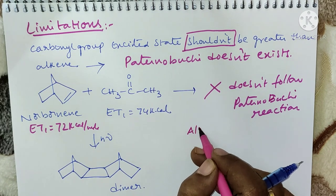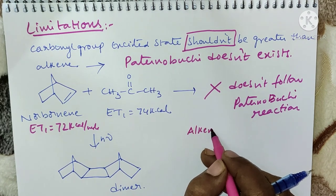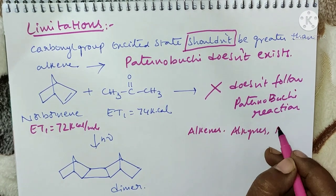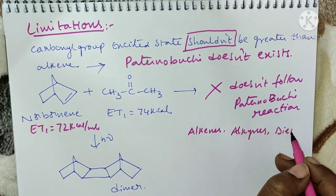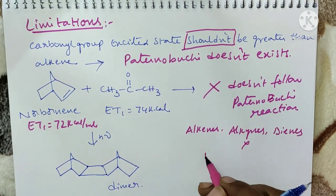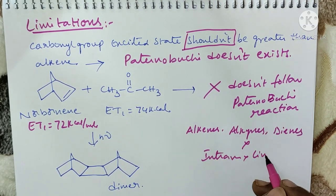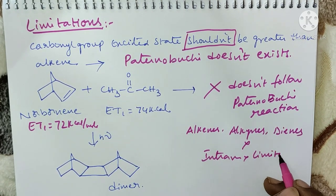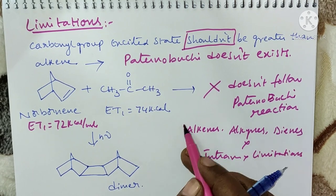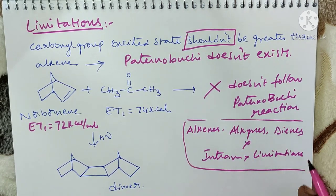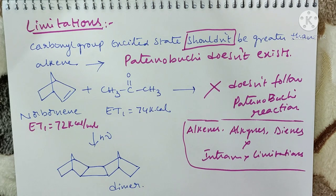In this video we explained the Paterno-Büchi reaction with alkenes, alkynes, dienes, intramolecular combination, and its limitations. We are also providing some notes at the end of the video. Thank you.